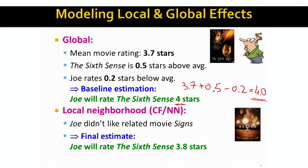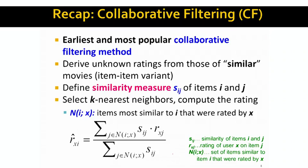On the other end of the spectrum, we can use very local neighborhood properties of a given user and movie to make recommendations — this is what collaborative filtering does. The idea is to estimate what other movies are similar to the Sixth Sense that Joe also rated, and based on this make a recommendation. We want to derive unknown ratings from ratings of similar movies; this is item-item based collaborative filtering. The big question is how do we operationalize the notion of similarity.